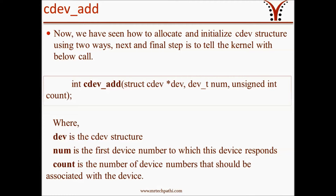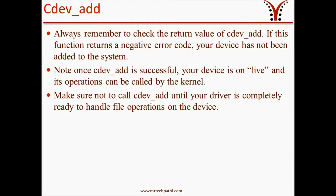The next and final step is to call cdev_add, which takes three parameters. The first parameter is dev, which is the cdev structure. The second parameter is num, the first device number to which the device responds. The third parameter is count, the number of device numbers that should be associated with the device. Always remember to check the return value of cdev_add — if the function returns a negative error code, your device has not been added to the system. Once cdev_add is successful, your device is live and its operations can be called by the kernel. Make sure not to call cdev_add until your driver is completely ready to handle file operations on the device.